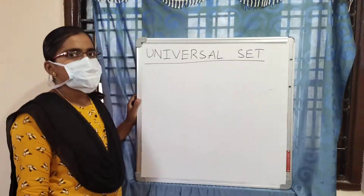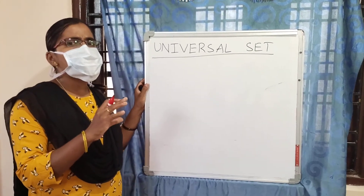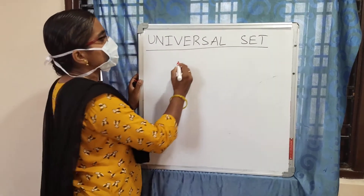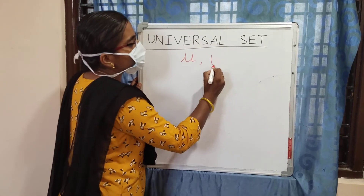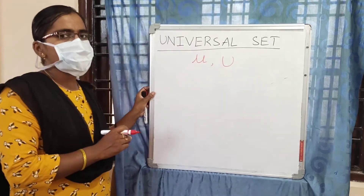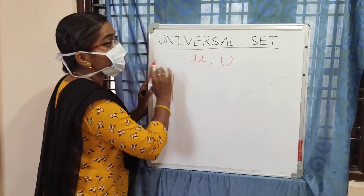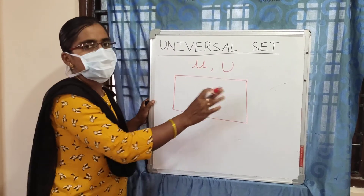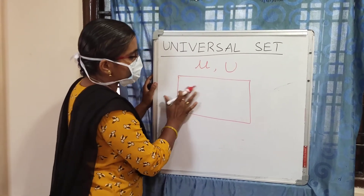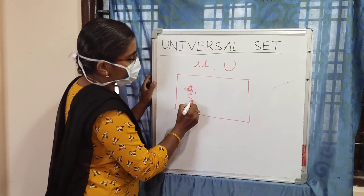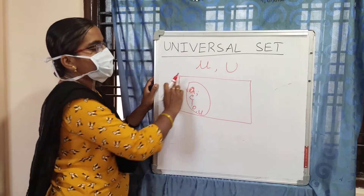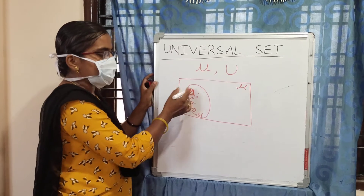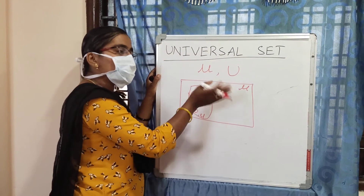Universal set is the set of all members related to a given topic. When we talk about a topic, the universal set covers all elements related to it. Universal set is denoted by U. For example, if the topic is alphabets, the universal set is the set of all 26 English alphabets — including vowels A, E, I, O, U and consonants.